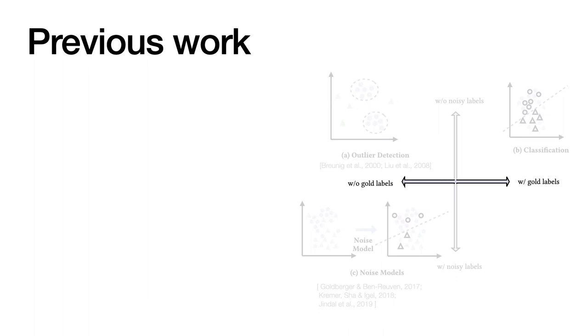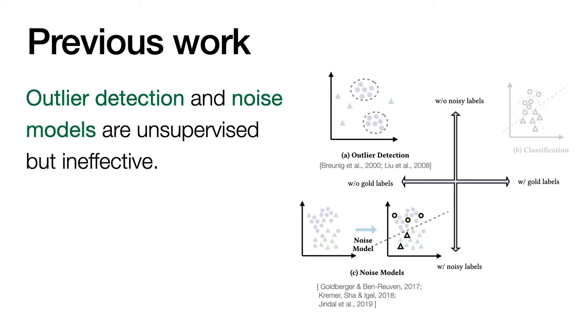Existing methods are either supervised or unsupervised, depending on whether or not they use human annotated gold labels. Examples of unsupervised methods include outlier detection and noise models. The difference here is that noise models also leverage the noisy labels. But neither of them perform well on their specific task due to the high error rate.